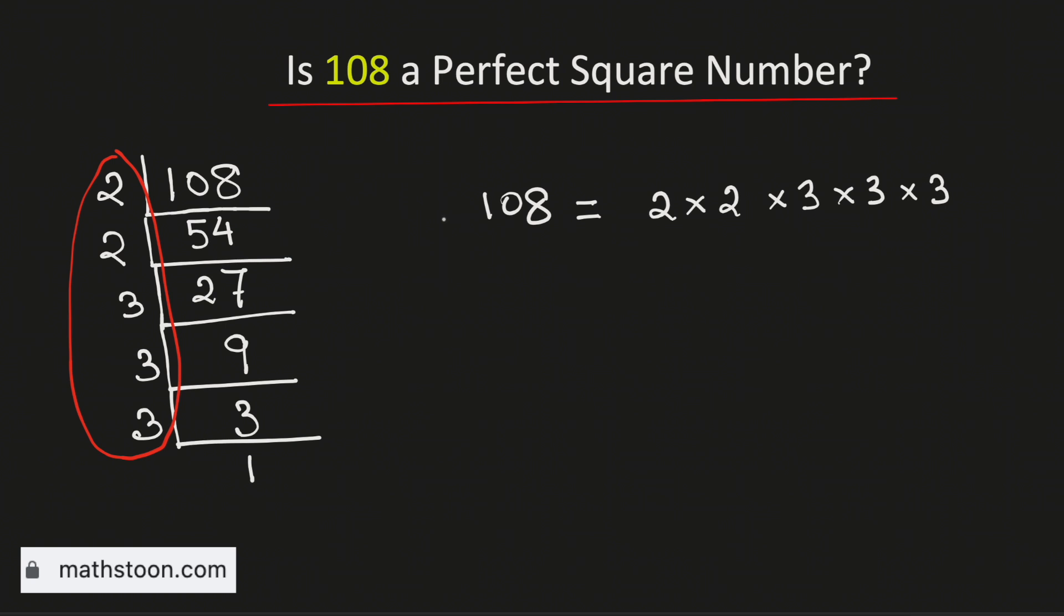Now if we take the square root on both sides we get square root of 108 is square root of these numbers. Now make a pair of numbers.